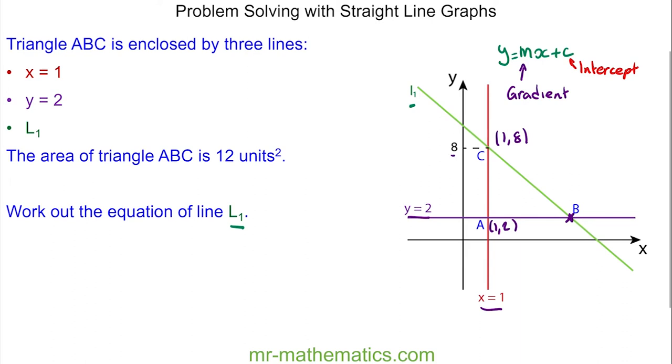So to work out the coordinate at B we're going to use the fact that the area of triangle ABC is 12 units squared. We can use the y values of the coordinates at A and C to work out the perpendicular height of 6 units, which is the difference between 2 and 8.